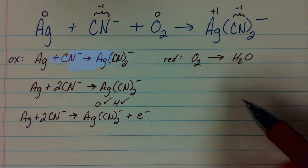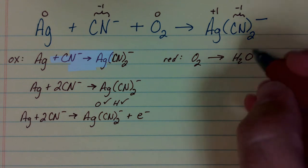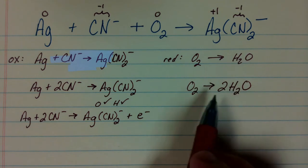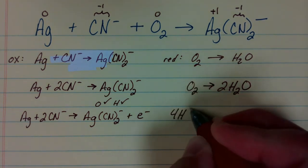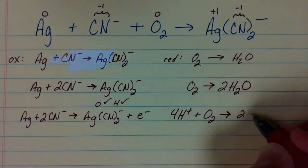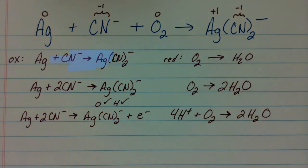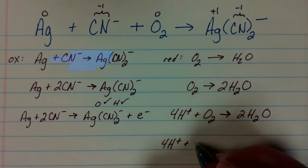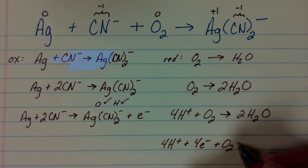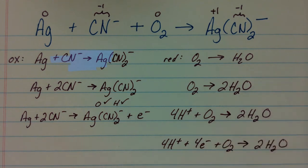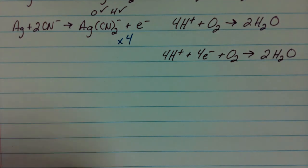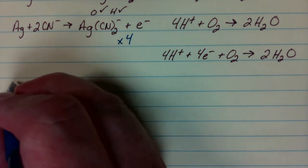Now for the reduction half-reaction. We balance everything but oxygen and hydrogen — that's already done. We balance oxygen by adding water molecules to the side that needs more oxygen, which is the right side. Then we balance hydrogens by adding 4 H⁺ to the left side so that we have 4 hydrogen atoms on both sides — the same process as for an acidic solution. To balance charge, there's positive 4 on the left and no charge on the right, so we add 4 electrons to the left side, bringing both sides to 0. The least common multiple of 1 and 4 is 4, so we multiply all coefficients of the oxidation half-reaction by 4 so the electrons cancel when we add the two half-reactions together.